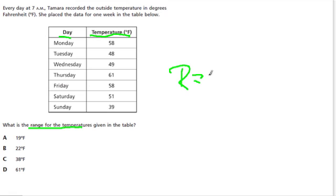Range is just highest value, HV, minus lowest value. That's one quick way to find it.